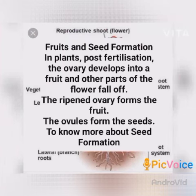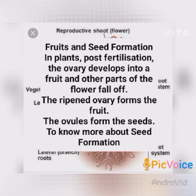Fruit and seed formation in plants — post-fertilization: The ovary develops into a fruit and the other parts of the flower fall off. The seeds ripen from the fruit, and the embryo develops from the seed, to form a new plant.